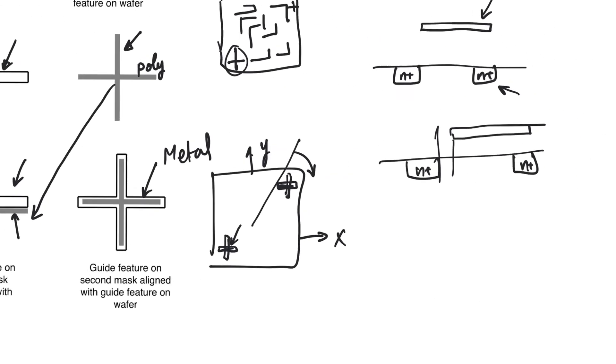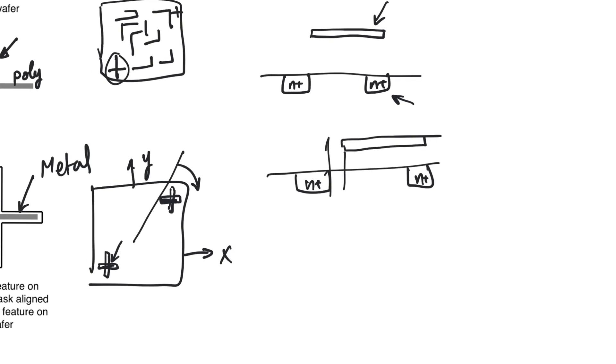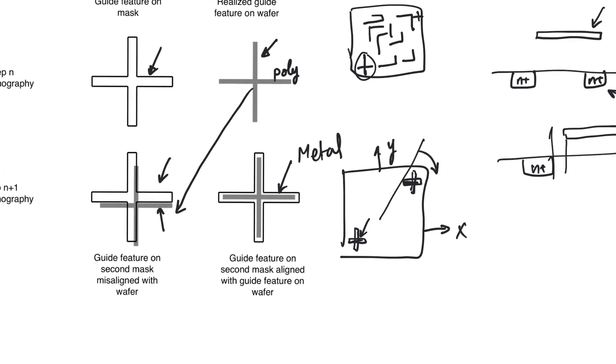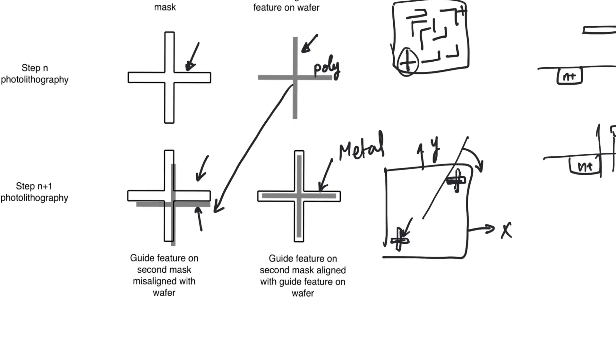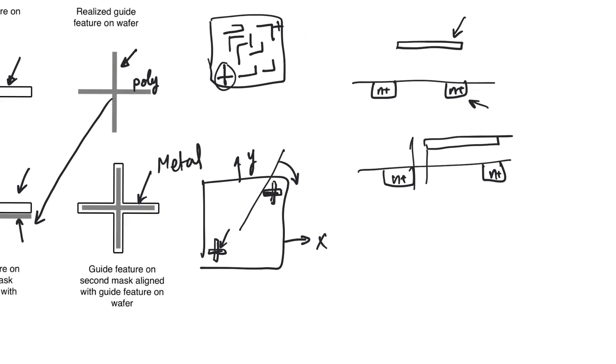However, any slight misalignment between the polysilicon gate and the sources and drains will be devastating. So even this kind of alignment is not going to be enough to guarantee that we create proper transistors.